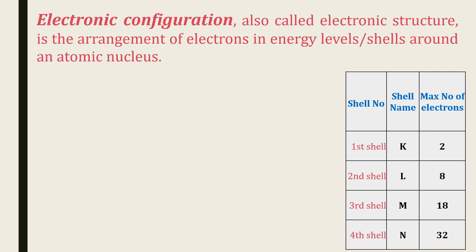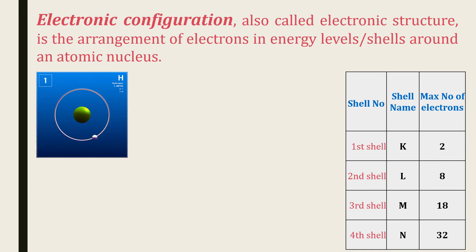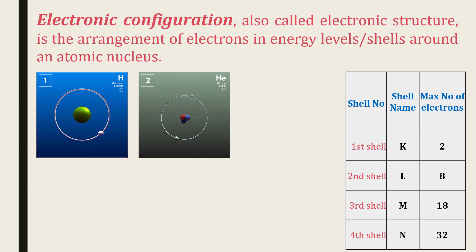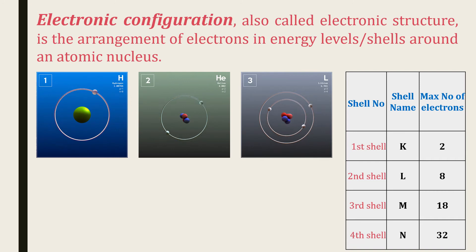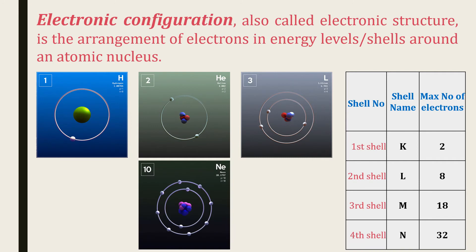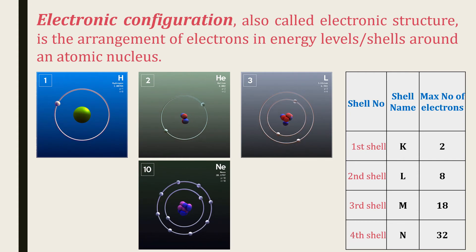Let's see how electrons are arranged in different shells for various elements. Hydrogen has 1 electron in the K shell, the first shell. Helium has 2 electrons in the K shell. Lithium has a total of 3 electrons distributed in the K and L shells. The first shell accommodates the maximum of 2 electrons, and the third electron is accommodated in the second shell. Neon has a total of 10 electrons — the first shell accommodates 2 electrons and the second shell accommodates 8 electrons.